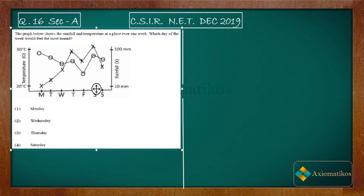Hello dear students, welcome to the Axiomatic course. This video is part of the solution series for CSIR NET December 2019. We are here with Problem 16 of your paper, which is a problem of general aptitude. The graph below shows the rainfall and the temperature at a place over one week.